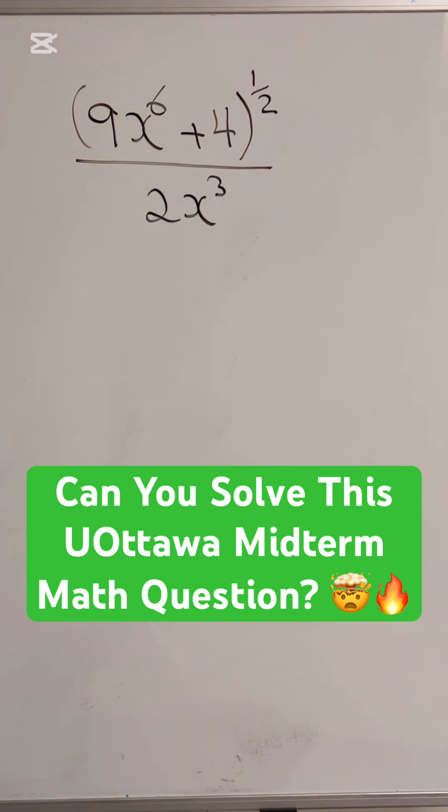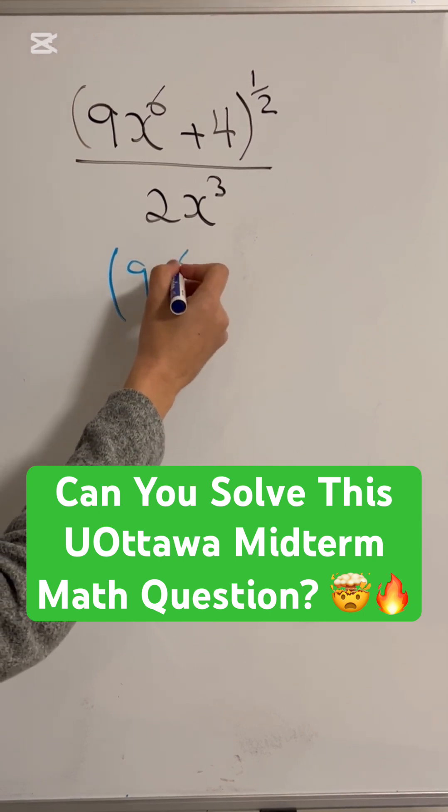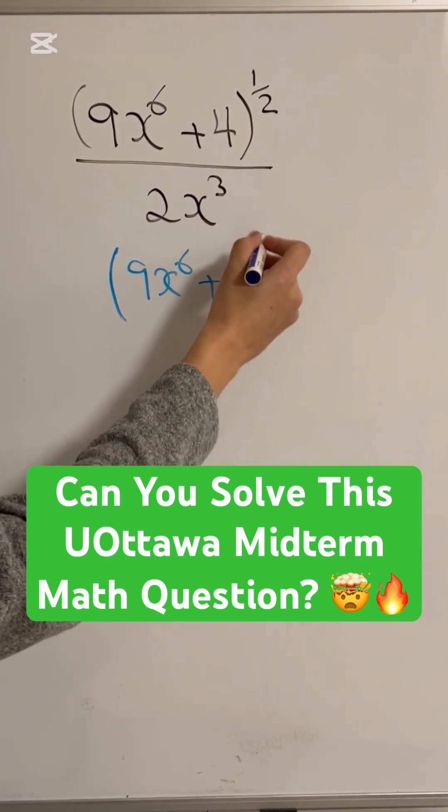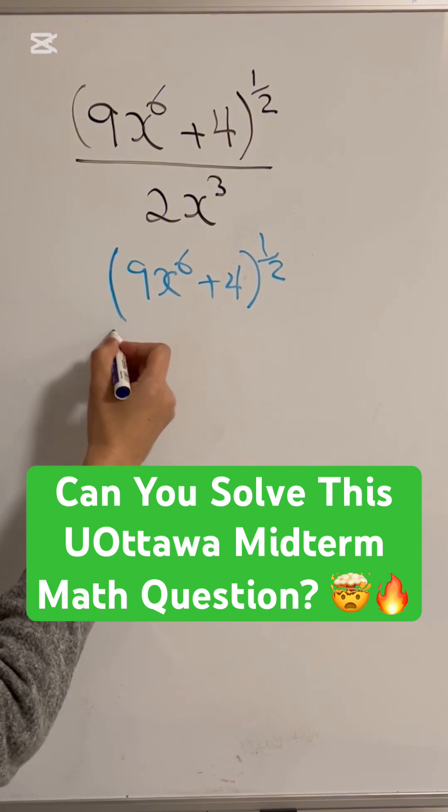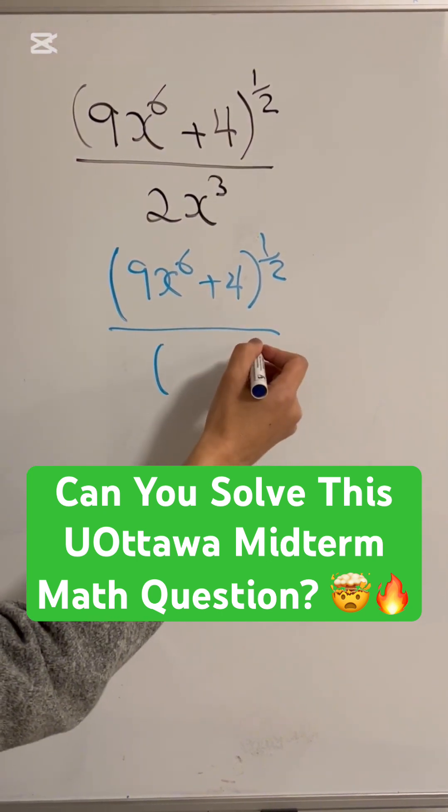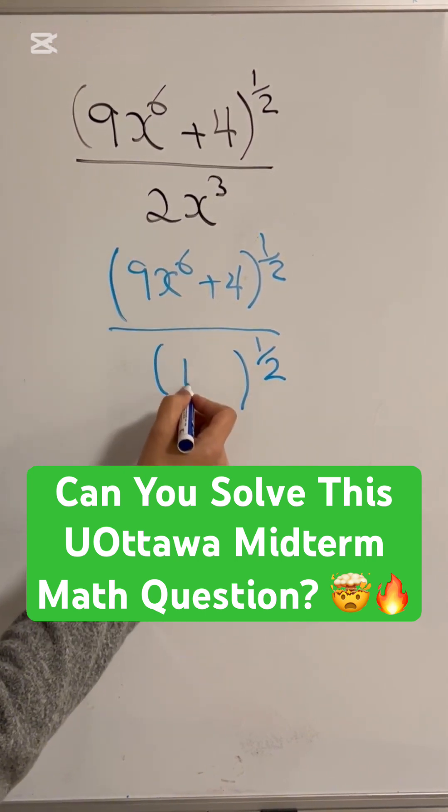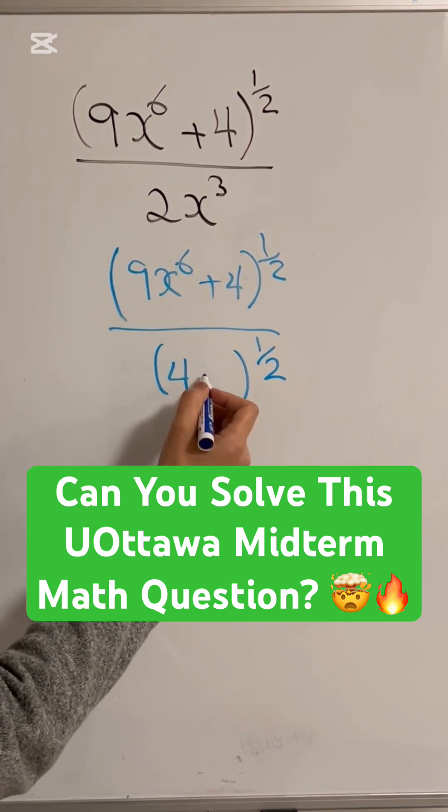To be able to simplify this, you would keep the 9x to the 6 plus 4 to the power of 1 half the same way. However, you have to put the bottom to the power of 1 half as well, but to be able to do that you have to change the 2 to 4, and the x cubed to x to the 6.